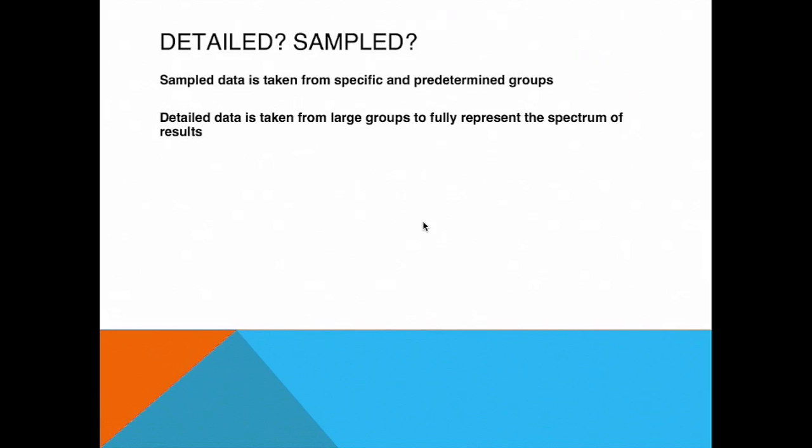When we're looking at data we want to ask ourselves, is it detailed? Is it sampled? Sampled data is taken from specific or predetermined groups. Let's say we want to take data on school children but we really only want to take data from male school children. This data that we're taking is sampled. It is specific. Of all the children we're only taking data from the males.